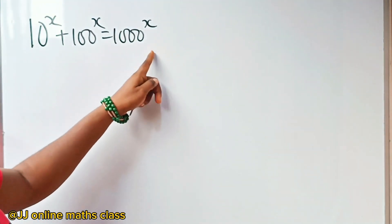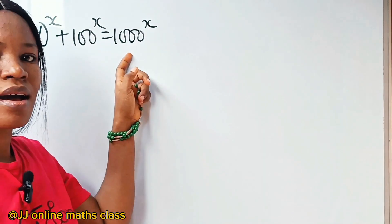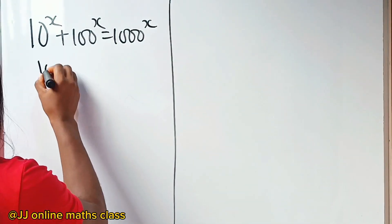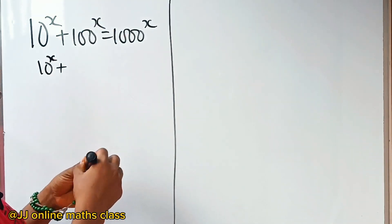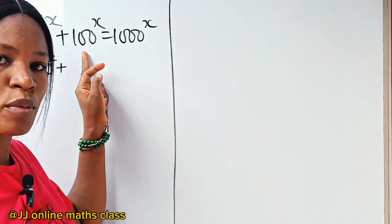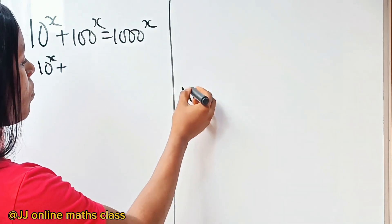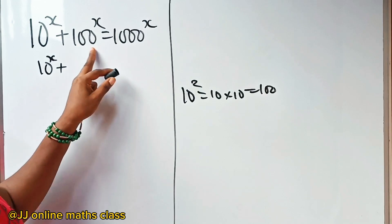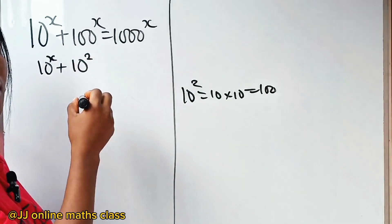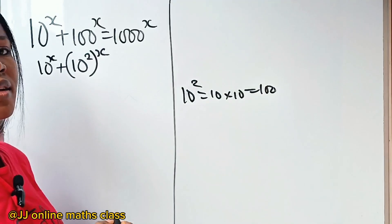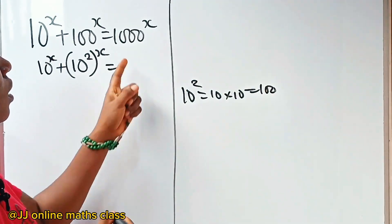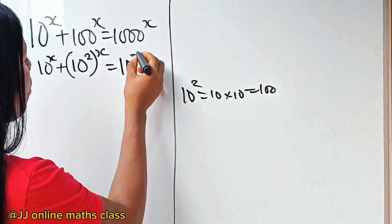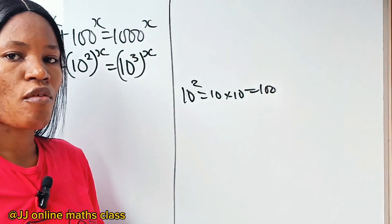First, when you look at this, all of them can be expressed as powers of 10. This is 10 to the power of x, plus 100 which is 10 to the power of 2 — that is 10 times 10 is 100 — so we can write this as 10 to the power of 2 raised to the power of x, is equal to 1000 which is 10 to the power of 3, so 10 to the power of 3 raised to the power of x.